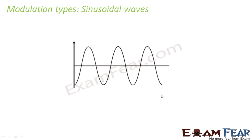Let us now talk about the types of modulation in the case of sinusoidal waves. Carrier waves can be of two types: sinusoidal or pulse. In the case of sinusoidal carrier waves, we will see the different types of modulation possible. We are going to talk about amplitude modulation, frequency modulation, and phase modulation — these are the three types of modulation for a sine wave.